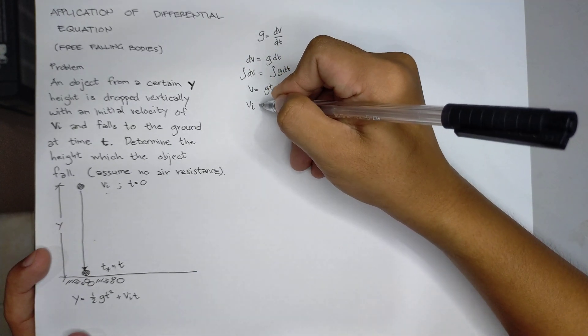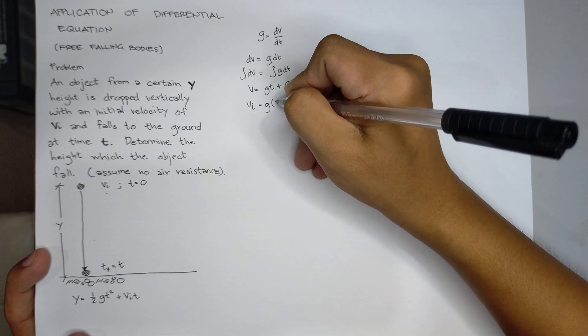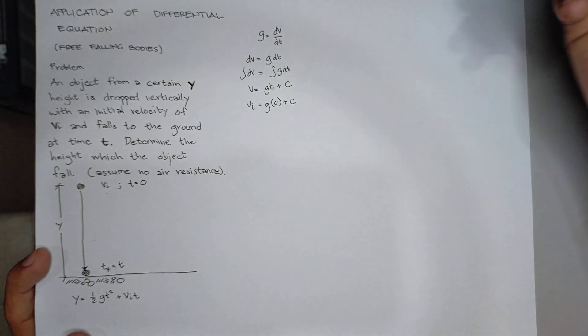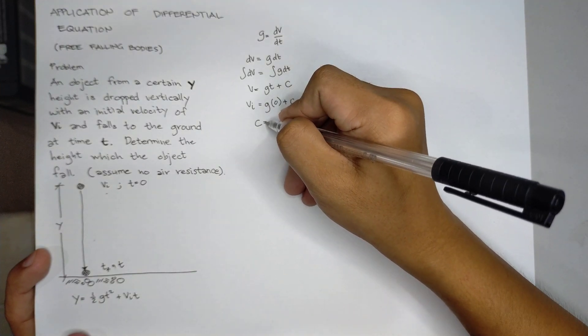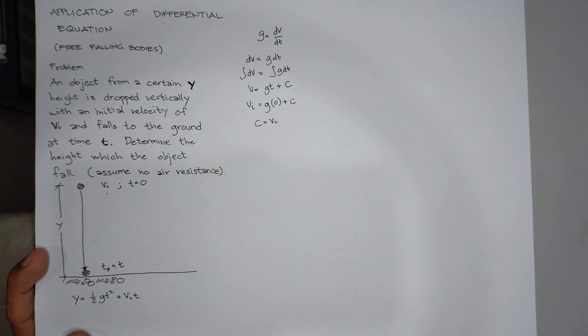Vi equals g times time equals 0 plus c. So we can solve c. c is equal to vi.